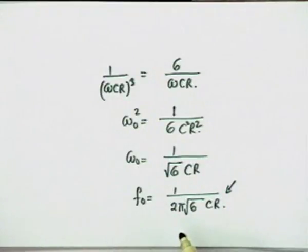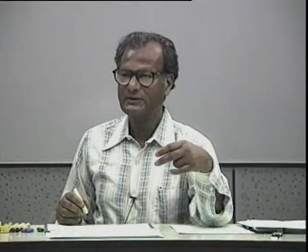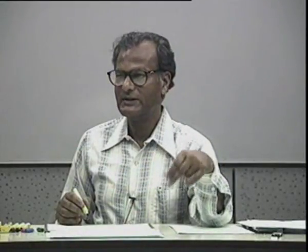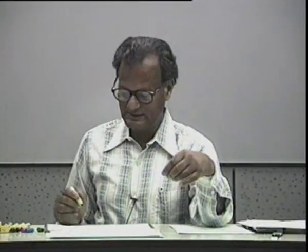So if the circuit oscillates, this will be the frequency of oscillation. The frequency is determined by C and R — the passive beta circuit elements. One difficulty: if F₀ is to be variable, either all C's must be varied simultaneously or all R's must be varied simultaneously, since the formula depends on equal C and equal R values.